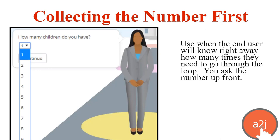The first method is collecting the number first. You use this when the end user will know right away how many times they have to go through the series of questions. For example, you're asking them how many children they have. You ask for that number upfront — it's the jumping-off point but is not repeated every time through the loop. The end user answers the 'how many' question once, and that tells the software how many times to take them through the next series of questions. This example maxes out at 10, and the next series of questions will ask multiple things about each child.